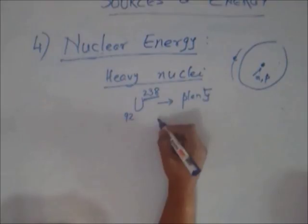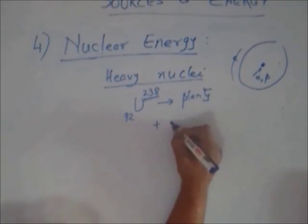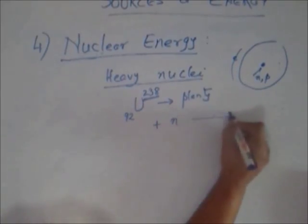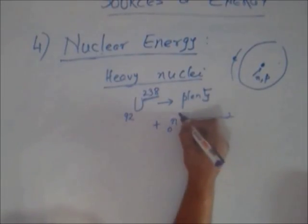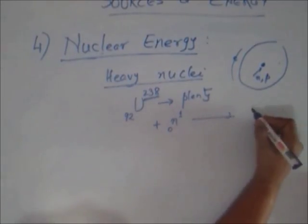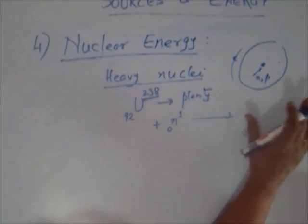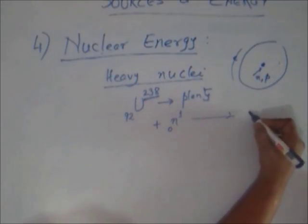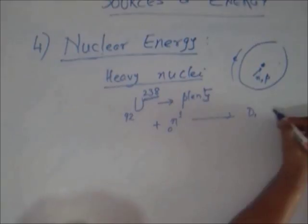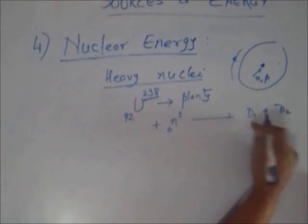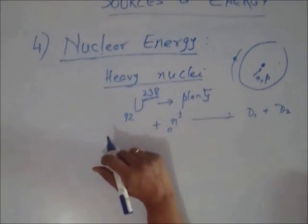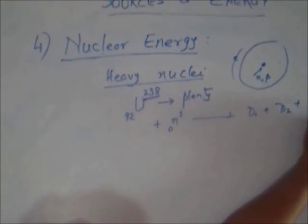When a heavy nucleus is hit by slow-moving neutrons - a neutron has charge 0 and mass 1 - it breaks up into more or less equal daughter nuclei. Let's call them D1 and D2. These are called daughter nuclei; the original is the parent nucleus, and neutrons are also released.